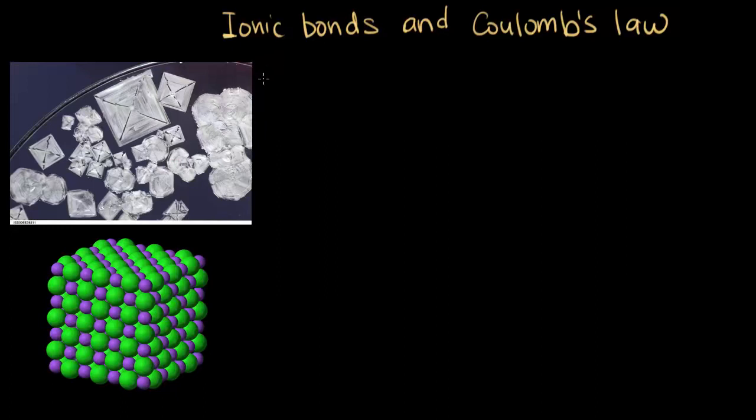Ionic bonds are the bonds that hold together ionic compounds. Basically, it's what holds together cations and anions. An example of a compound that's held together with ionic bonds is sodium chloride, also known as table salt.